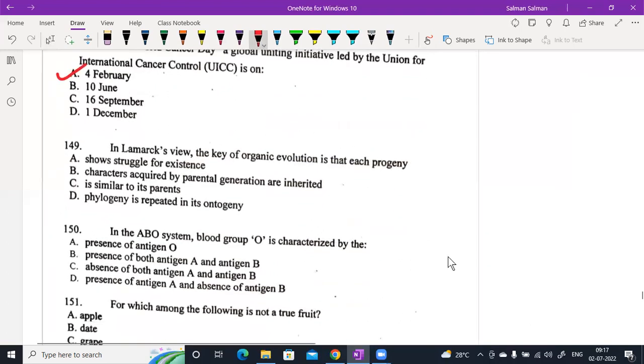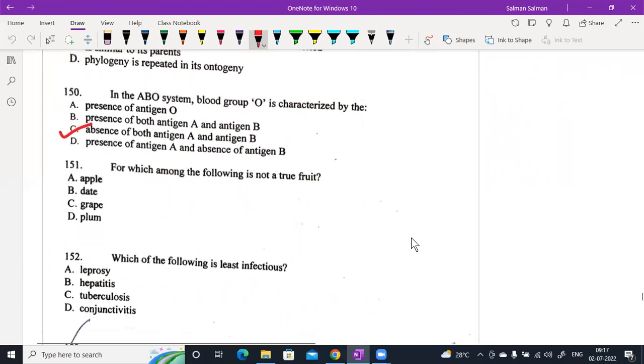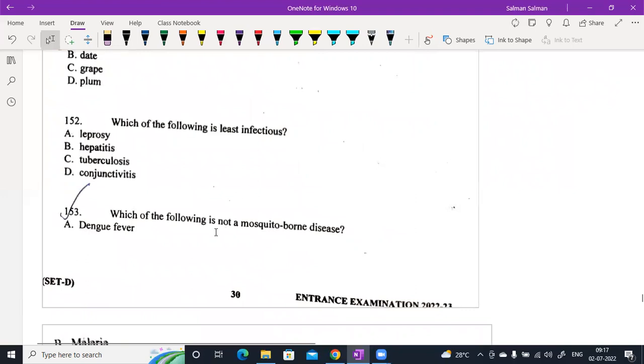In Lamarck's view, the key of organic evolution is that characteristics acquired by parental generation are inherited, option B. In the ABO system, the blood group O is characterized by the absence of both antigen A and antigen B. Which among the following is not a true fruit? An apple. Which of the following is least infectious? It is hepatitis.